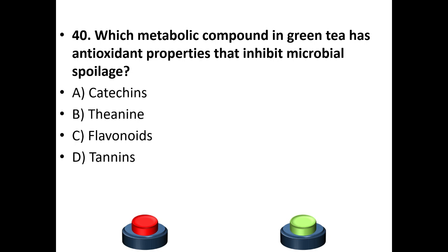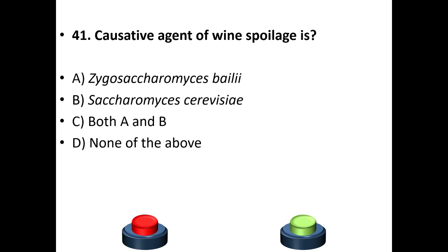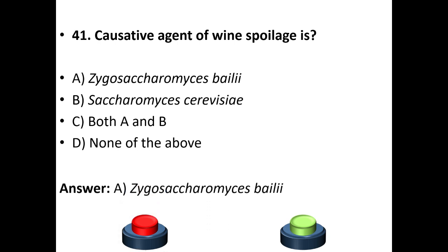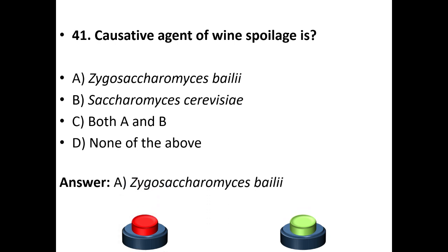Fortieth question: which metabolic compound in green tea has antioxidant properties that inhibit microbial spoilage? A: Catechins. B: Theanine. C: Flavonoids. D: Tannins. Answer is A — catechins. Forty-first question: causative agent of wine spoilage is A: Zygosaccharomyces bailii. B: Saccharomyces cerevisiae. C: Both A and B. D: None of the above. Answer is A — Zygosaccharomyces bailii.